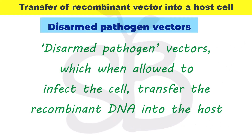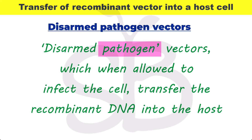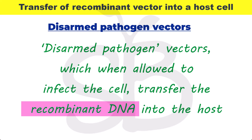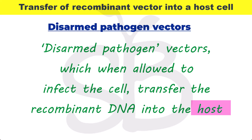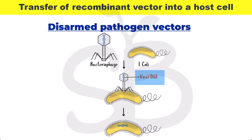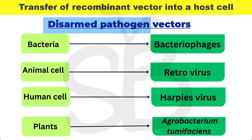Another method is to use disarmed pathogens. These pathogens are used to carry the gene of interest. The pathogen is modified so it cannot cause disease, but it can still infect the host cell. The pathogen transfers its genetic material — including the gene of interest — into the host cell's body.